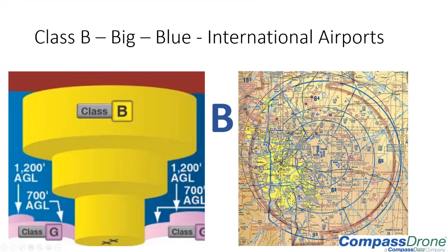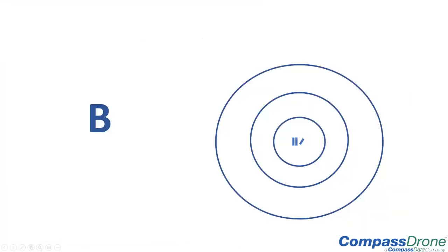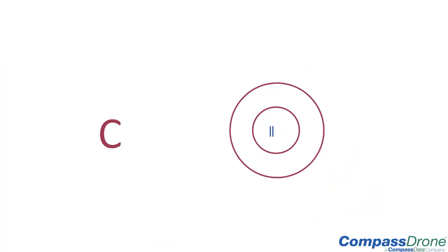To help you memorize: Class B, Bravo airspace is depicted in blue on FAA sectional charts, controlled to the surface near the airport, with tiers extending outward as airplanes leave. When you see a thick blue line, think Class B airspace, think Bravo airport.